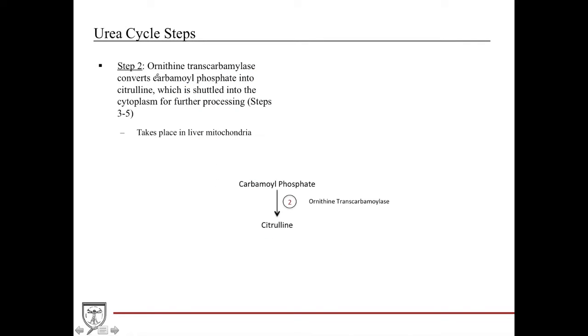Step two is where you take ornithine transcarbamylase as the enzyme. We're still in the mitochondria and you produce citrulline. Citrulline is then shuttled into the cytoplasm for steps three through five.